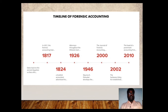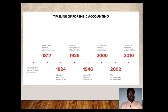In 1946, Maurice E. Peloubet developed the term Forensic Accounting in his essay 'Forensic Accounting: Its Place in Today's Economy.' In 2000, the Journal of Forensic Accounting, Auditing, Fraud and Taxation began publication. In 2002, the Sarbanes-Oxley Act established the Public Company Accounting Oversight Board, which was charged with developing accounting standards, conducting investigations, and ensuring corporate compliance. As a result of the Sarbanes-Oxley Act, there has been continuing emphasis on Forensic Accounting.